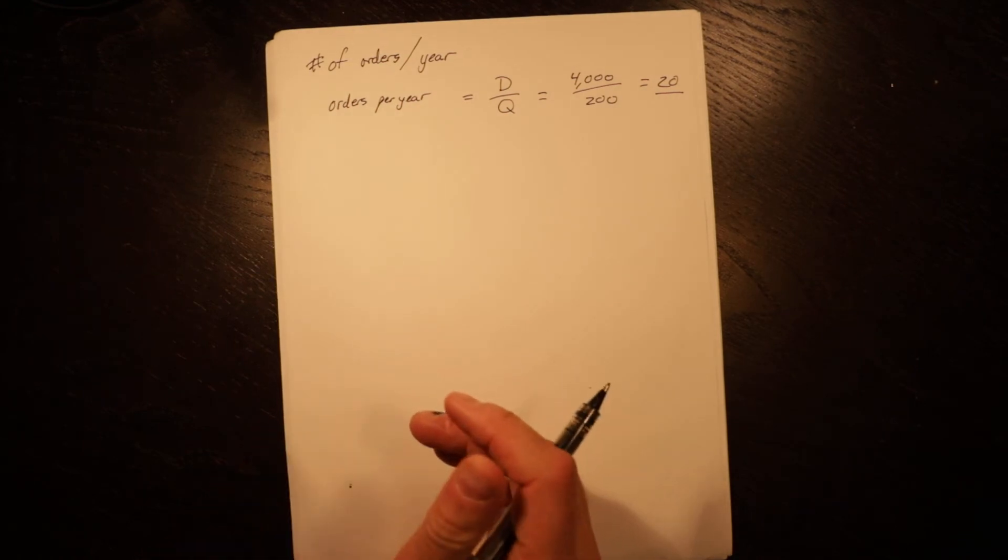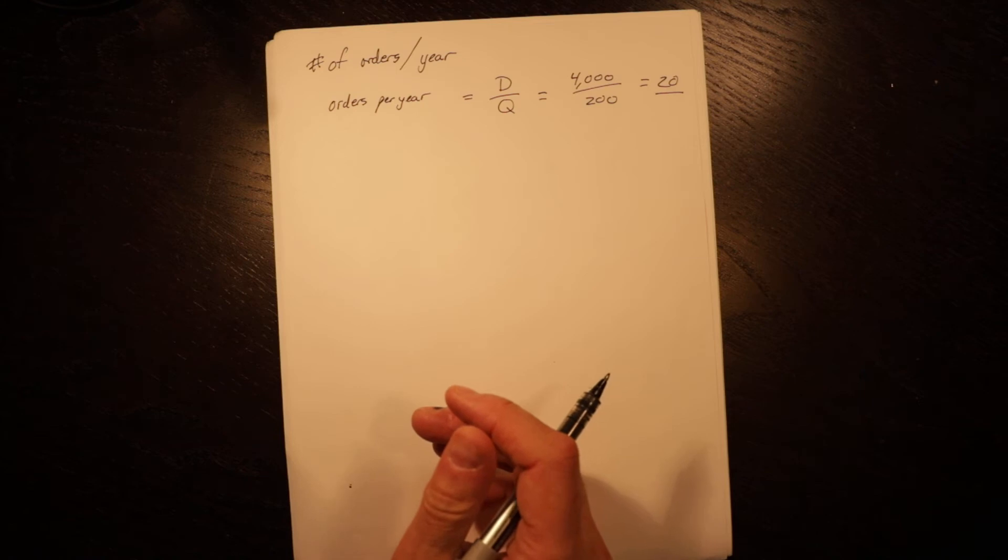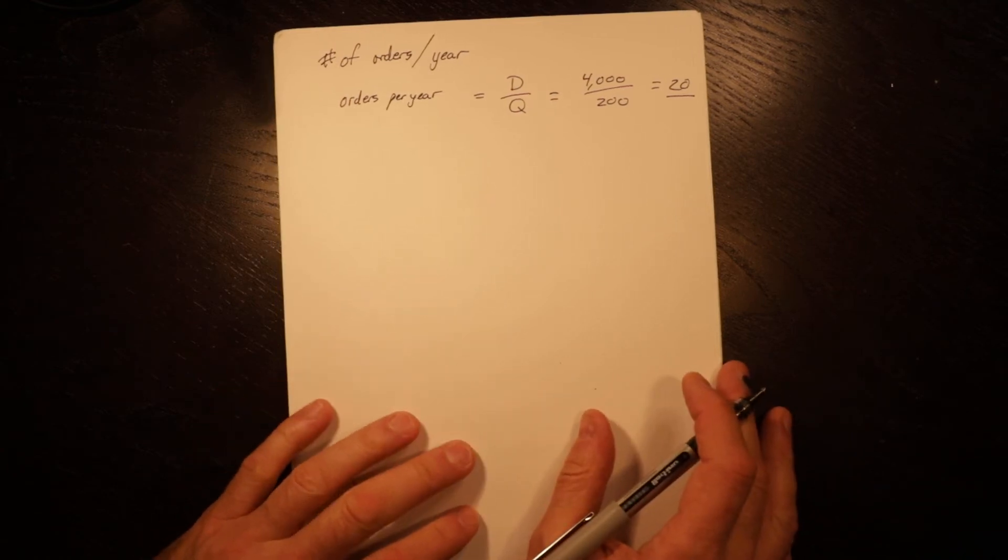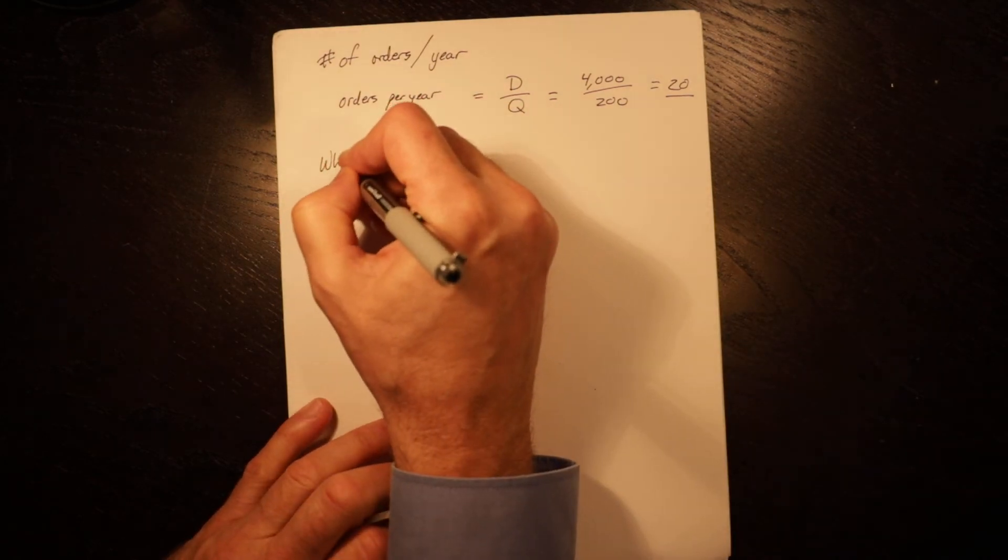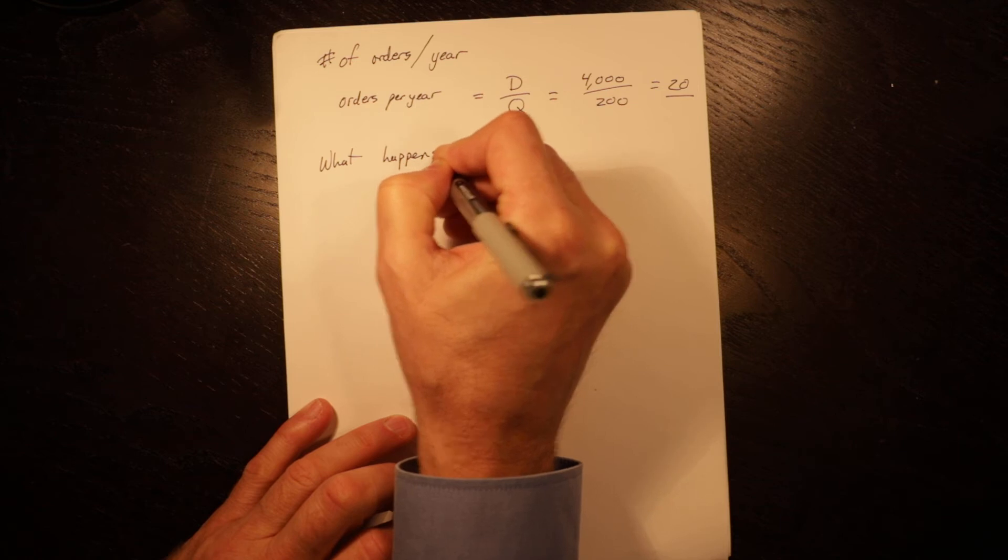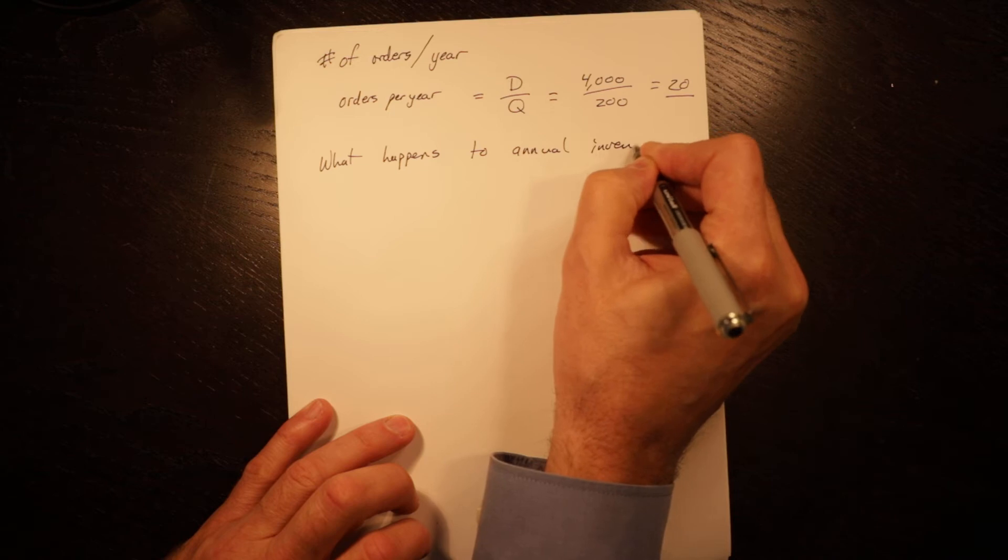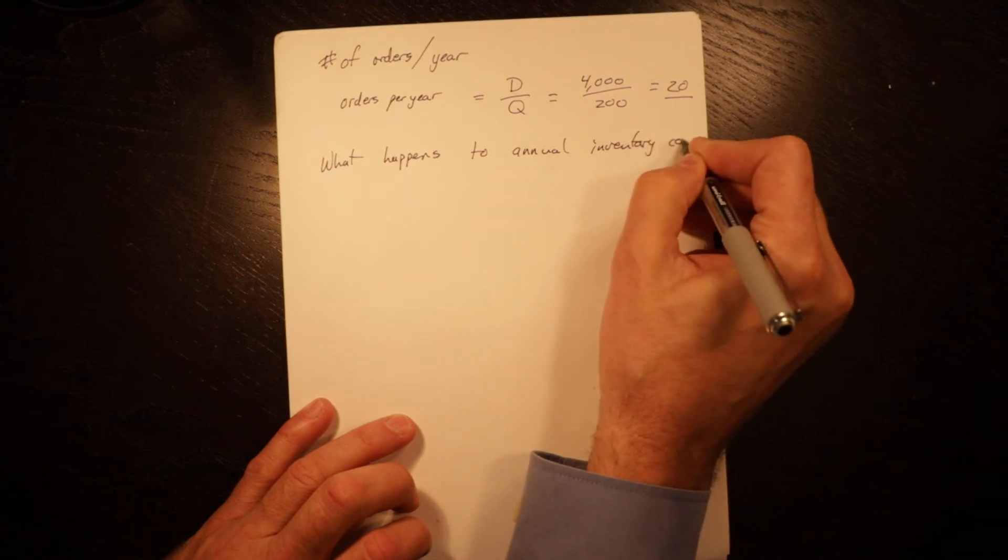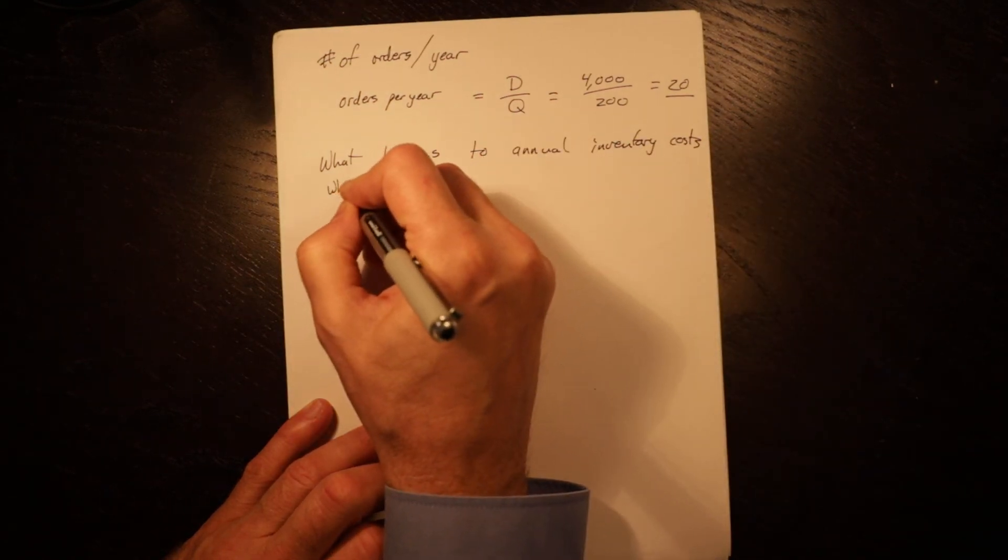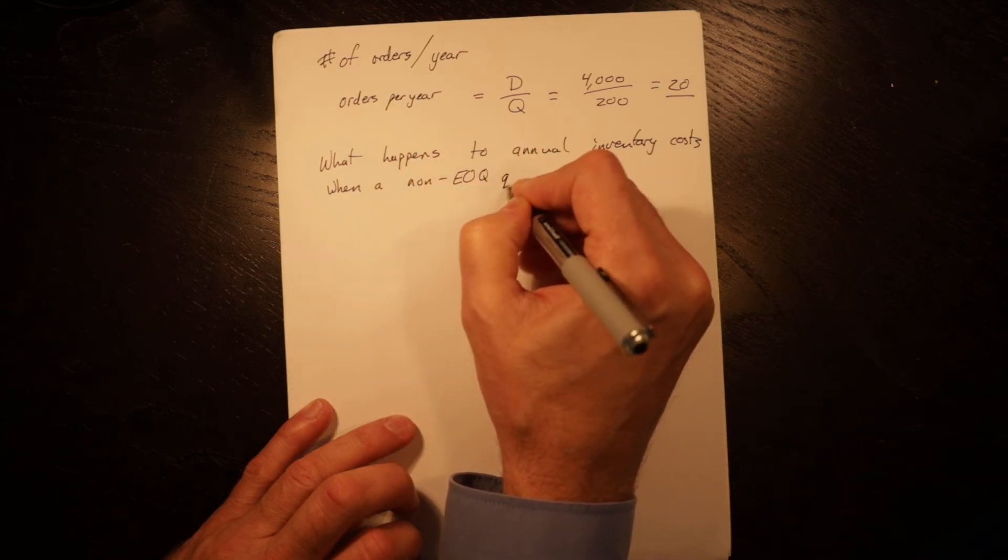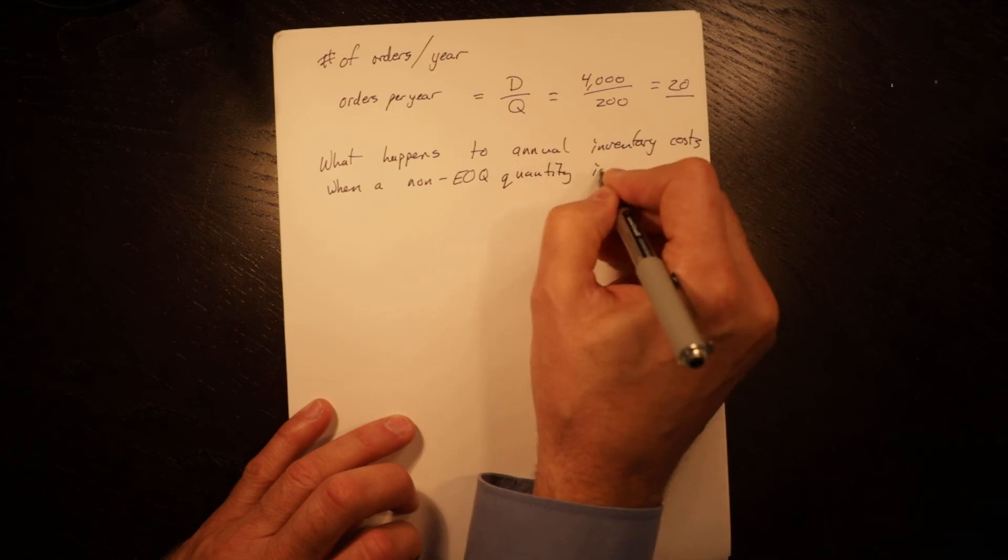Let's just reiterate the concept of EOQ. What happens to annual inventory costs when a non-EOQ quantity is ordered?